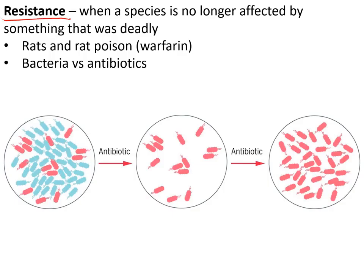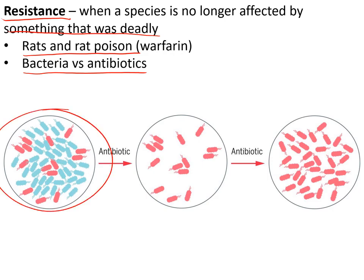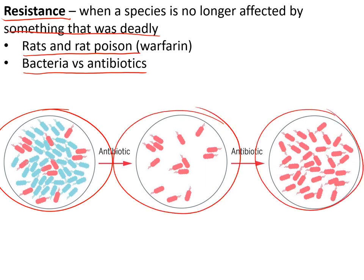Resistance describes how some species evolve the ability to overcome something that used to be deadly to them — for example rats evolving resistance to rat poison or bacteria overcoming antibiotics. Variation means some bacteria are naturally more resistant. When antibiotics are taken, the resistant ones survive, pass on their genes, and the resistant population spreads as the non-resistant ones die out.